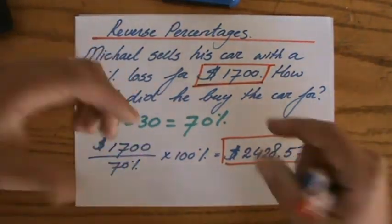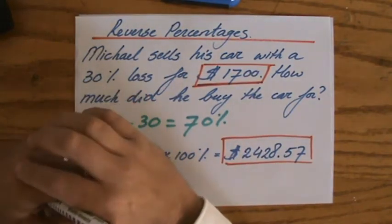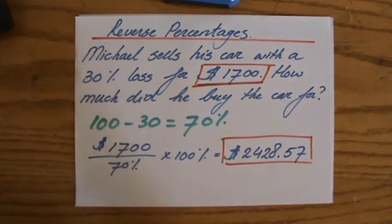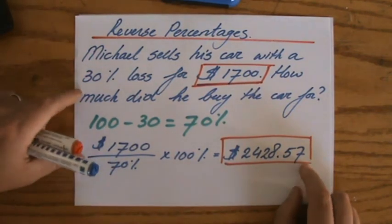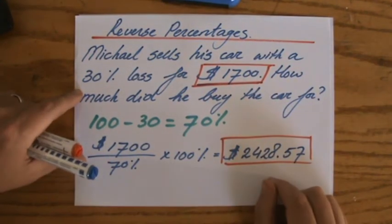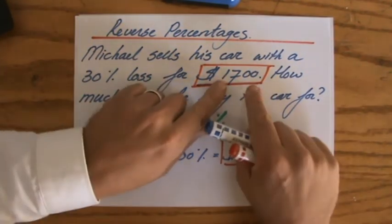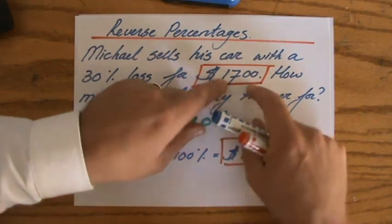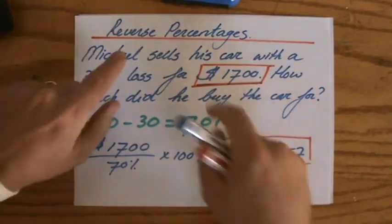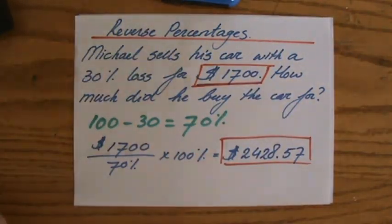But that is not the question. They don't say 'He buys it for this and sells it with a 30% loss for how much?' No, they say he sells for $1700 with a 30% loss—what was his original price? Reverse percentage. One more video, see you there.